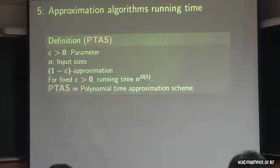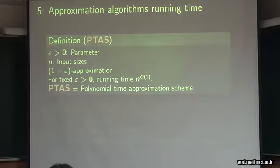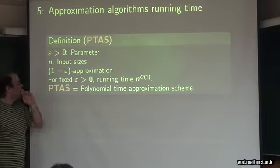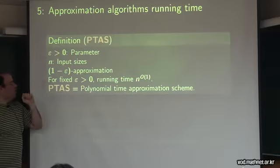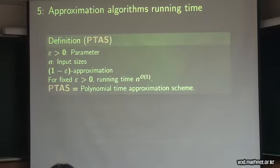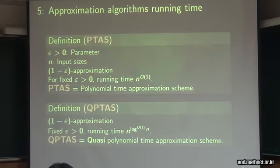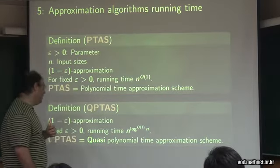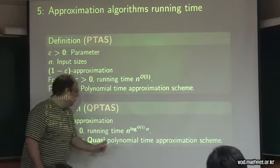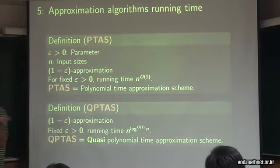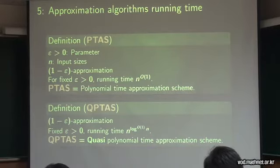I'm going to use the word PTAS quite a bit. A PTAS is a polynomial time approximation scheme — an approximation algorithm where, given a problem of size n and a parameter epsilon (the quality of approximation), you provide a 1 minus epsilon approximation, and for fixed epsilon the running time is polynomial. A QPTAS, quasi-polynomial time approximation scheme, is the same thing except that for fixed epsilon the running time is n to the power of some polylog constant.